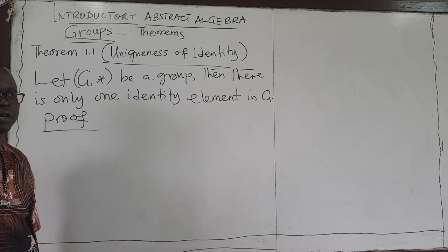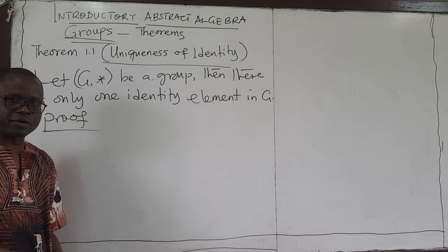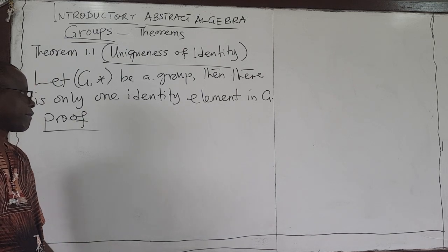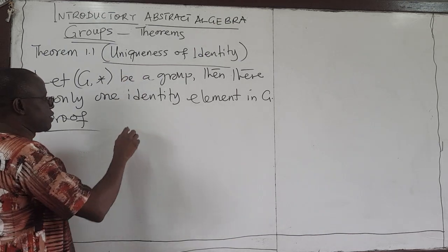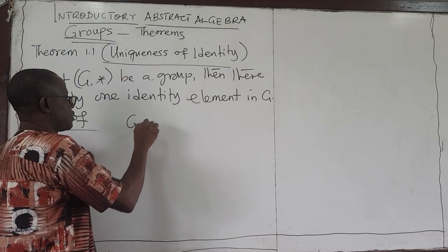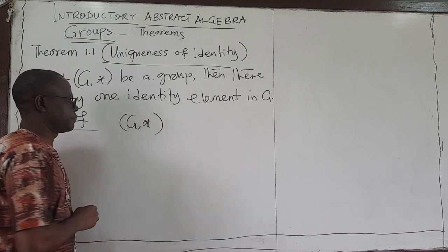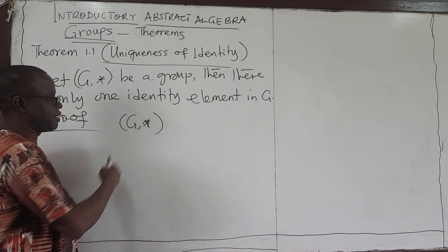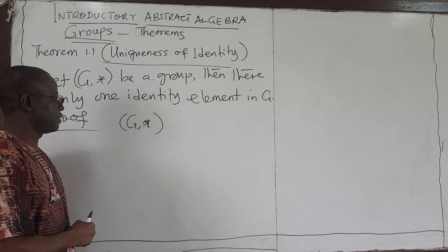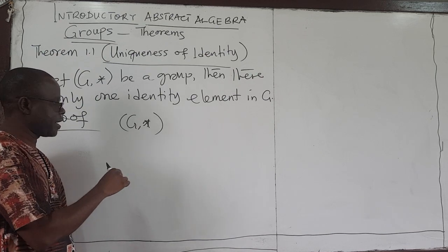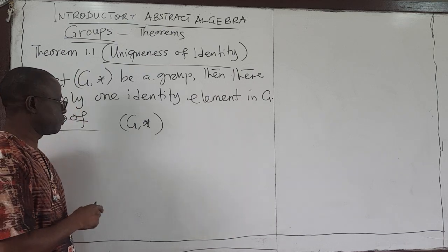We've looked at groups already. We have defined what a group is. For a structure G★, that's a set and a binary operation on that set. For this to be a group, you need at least three conditions to be satisfied.